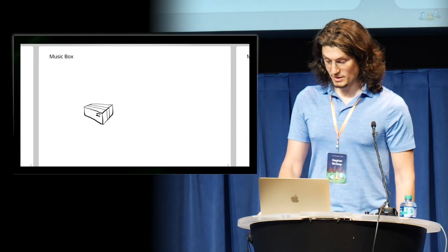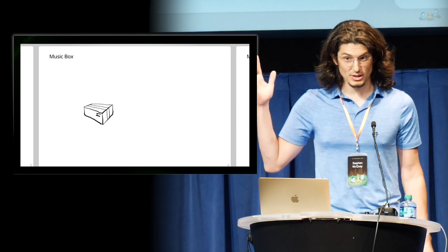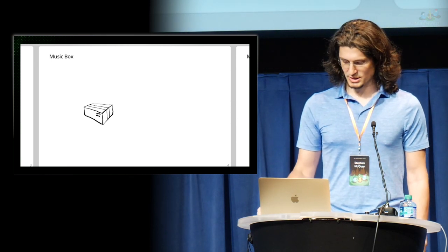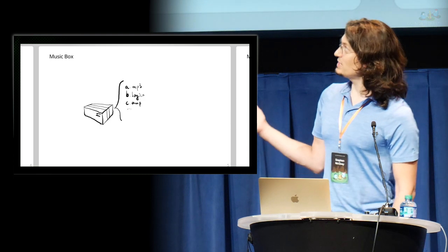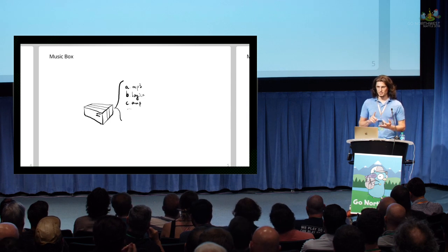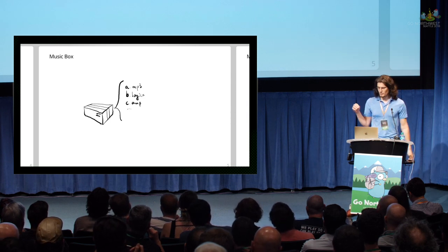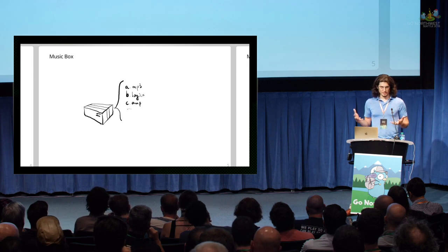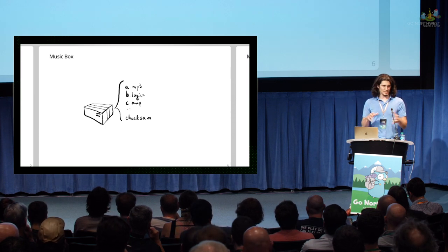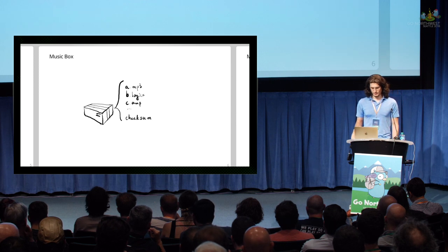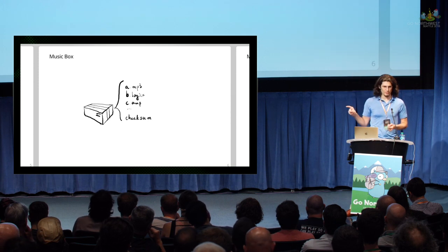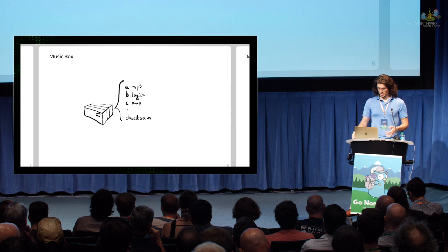What do the various parts of this music file delivery system look like? There's a box, and inside this box is where all of our files go. I ended up using a tar file for this box — we've got a collection of different file types: logic files, amp settings, lyrics, and so on. To verify the integrity of these files, we're going to add a checksum file to this tarball, and then we want to add a detached signature — we'll sign it with PGP.